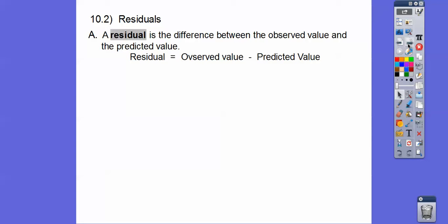The residual is just your observed value — which they usually give you in the table — minus your predicted value. We're going to find the predicted value in this lesson. Your book will say y minus y, but I like to say y minus y-hat. That's what my AP Statistics class textbook used — they used what's called a y-hat.